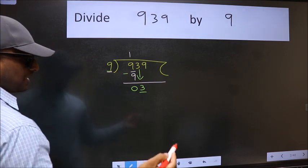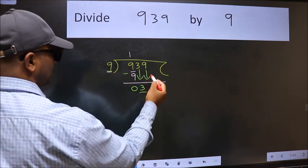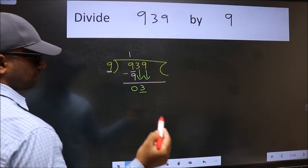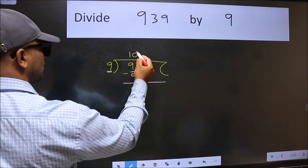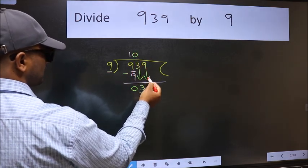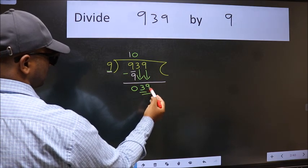So we should bring down the second number. And the rule to bring down the second number is we should put 0 here. Then only we can bring this number down.